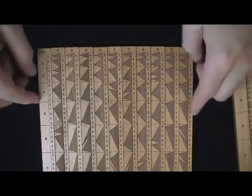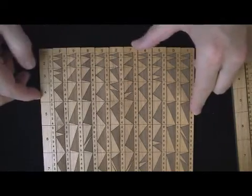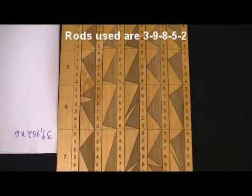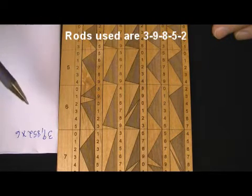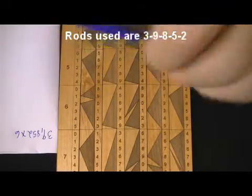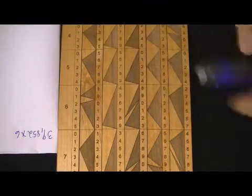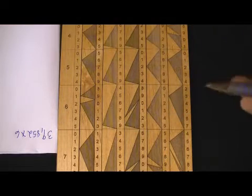All right, how do we use them? Let's first look at the multiplication one. And, pardon me while I try to get a little closer. Okay, I've set my rods up to find the answer to the question of what is 39,852 times 6. Now, when I'm working this number times 6, I'll use this row. If I was doing times 5, I'd use this row and so forth.